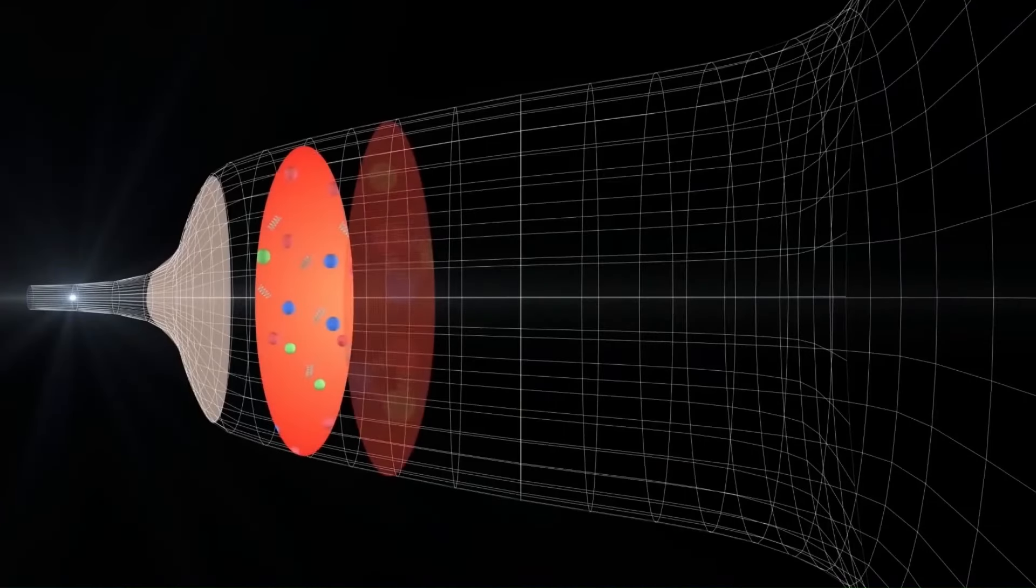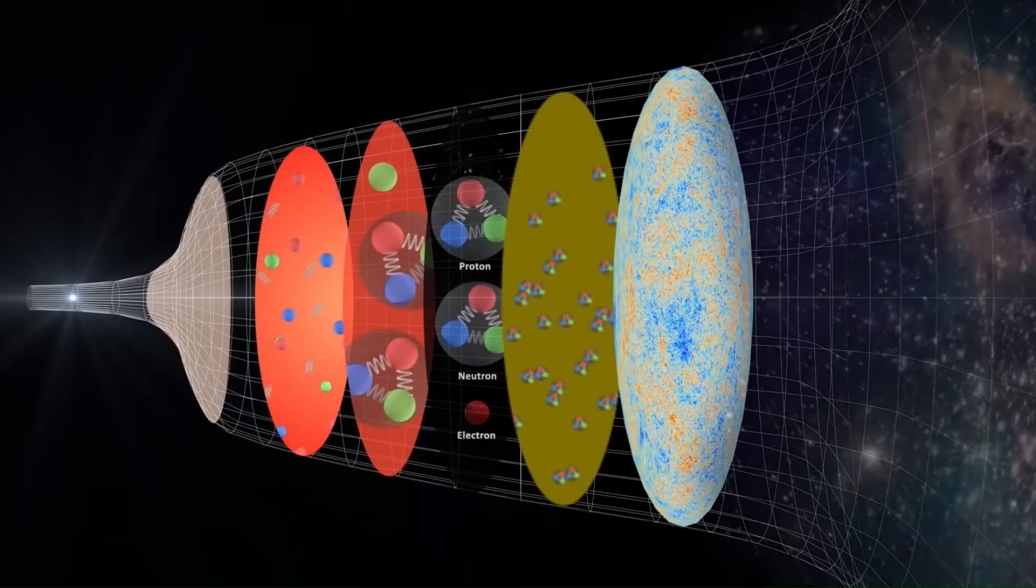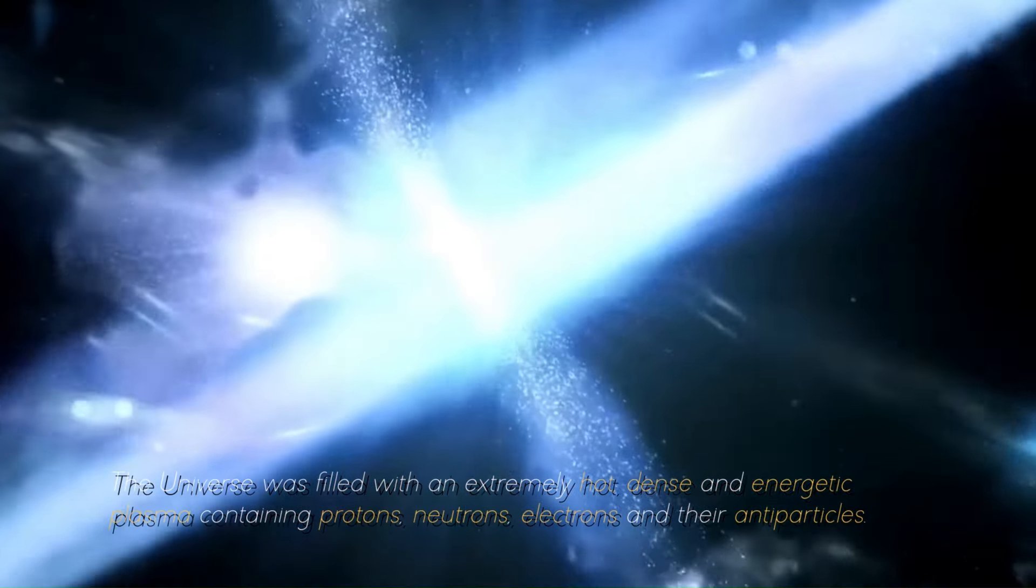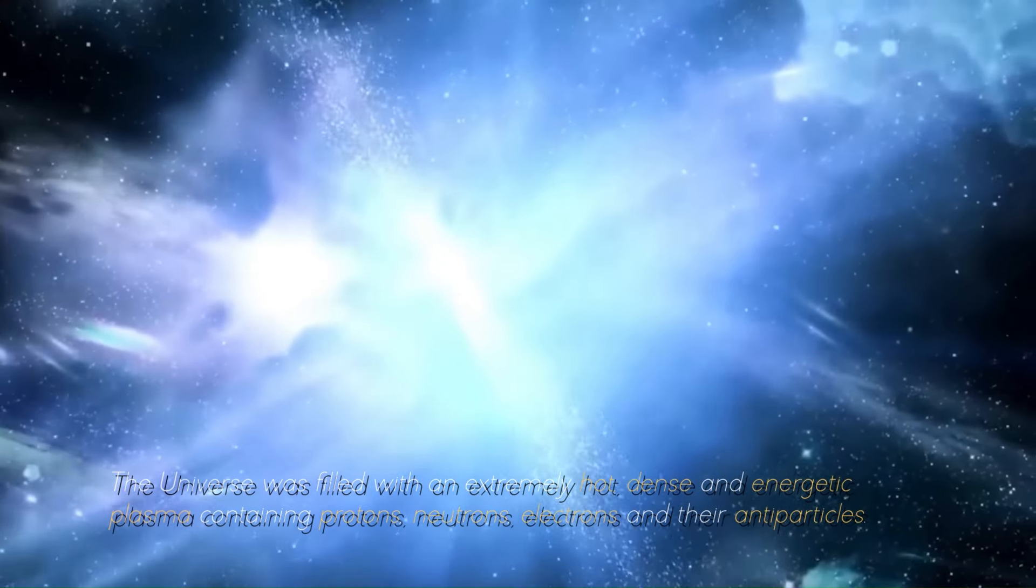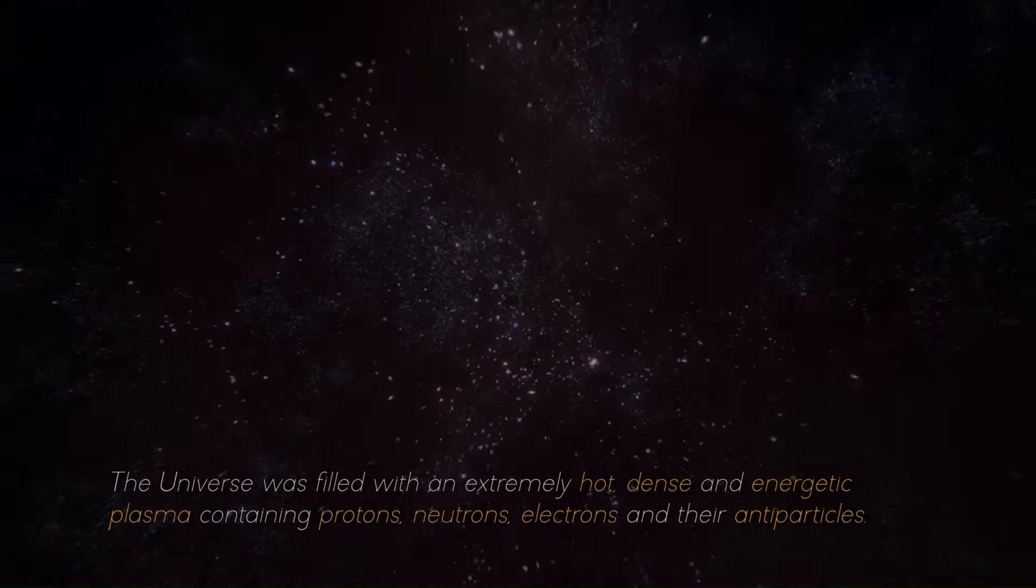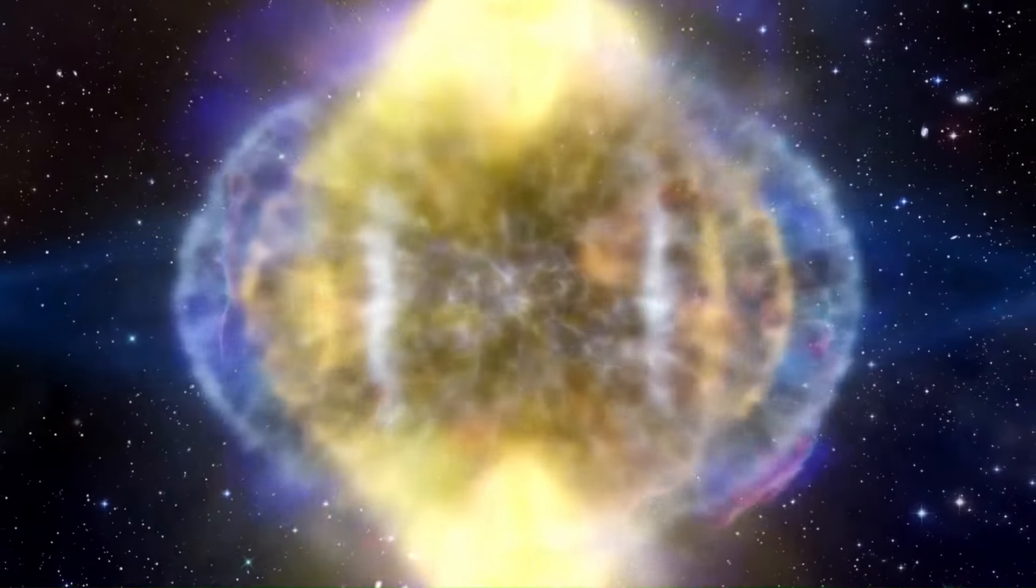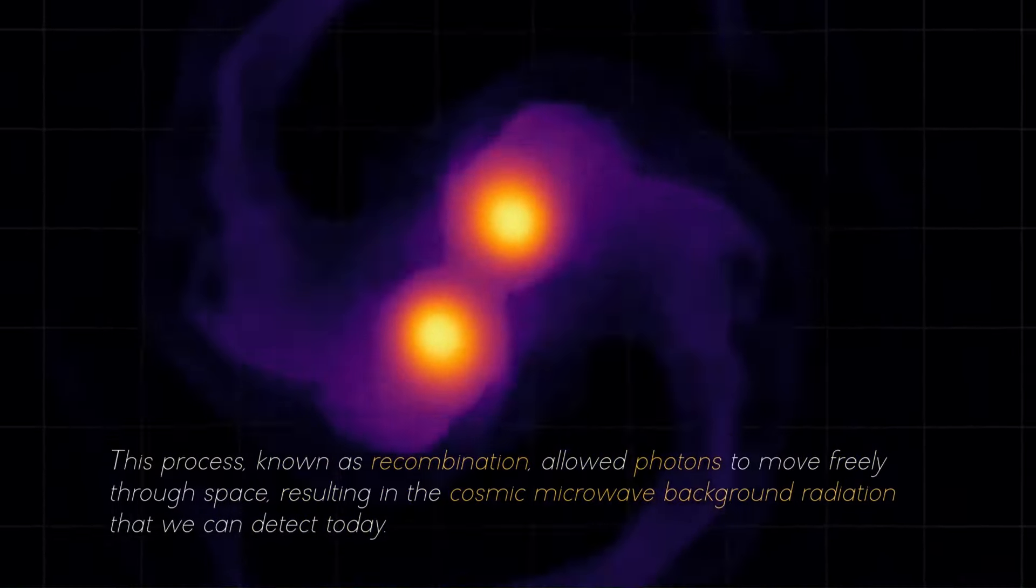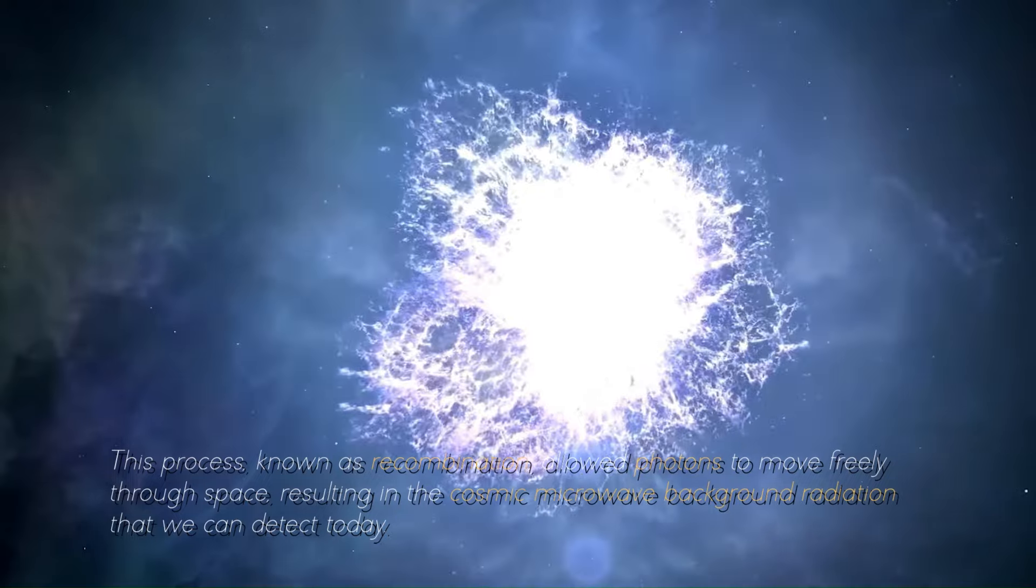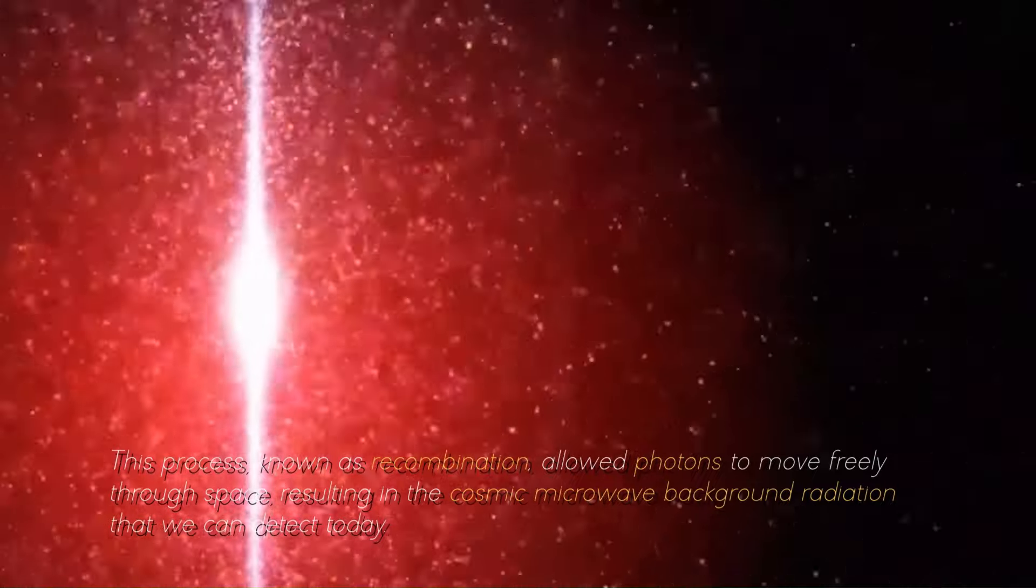During the first few seconds following the Big Bang, the singularity experienced a massive release of energy. The universe was filled with an extremely hot, dense, and energetic plasma containing protons, neutrons, electrons, and their antiparticles. As the universe cooled due to its expansion, the temperature dropped enough to allow electrons to bond with protons and form neutral atoms. This process, known as recombination, allowed photons to move freely through space, resulting in the cosmic microwave background radiation that we can detect today.